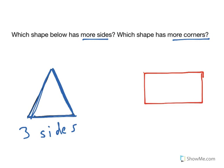Let's look at the rectangle. A rectangle has one, two, three, four sides. So to answer the first question, a rectangle has four sides, this triangle has three sides, that means that the rectangle has more sides.